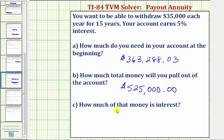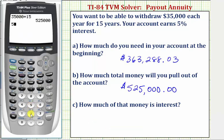And then finally Part C, how much of that money is interest? You made a one-time deposit of $363,288.03 in order to withdraw $35,000 once a year for 15 years, which came out to $525,000. So the difference between these two amounts would be the interest earned. Going back to the calculator: $525,000 minus $363,288.03 is equal to $161,711.97, which is the total interest earned.